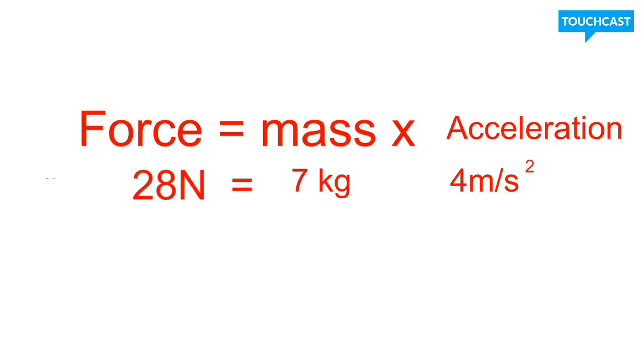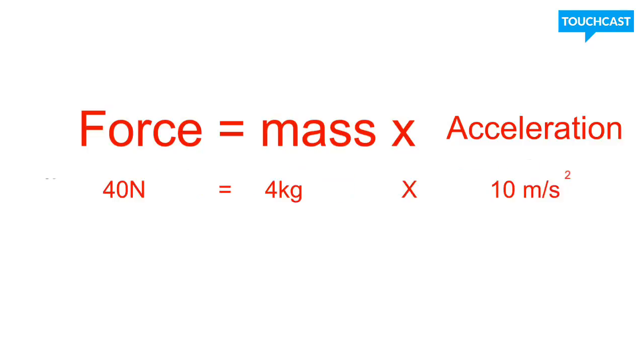Let's look at another example. If an object had a mass of 4 kilograms and an acceleration of 10 meters per second squared, when you multiply those together you get 40 newtons of force. So this is showing you that the force on that object is equal to its mass times its acceleration.